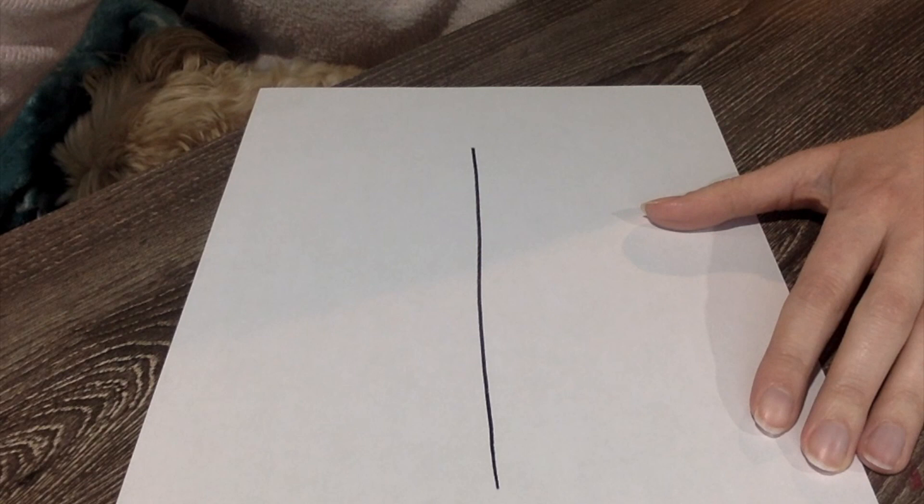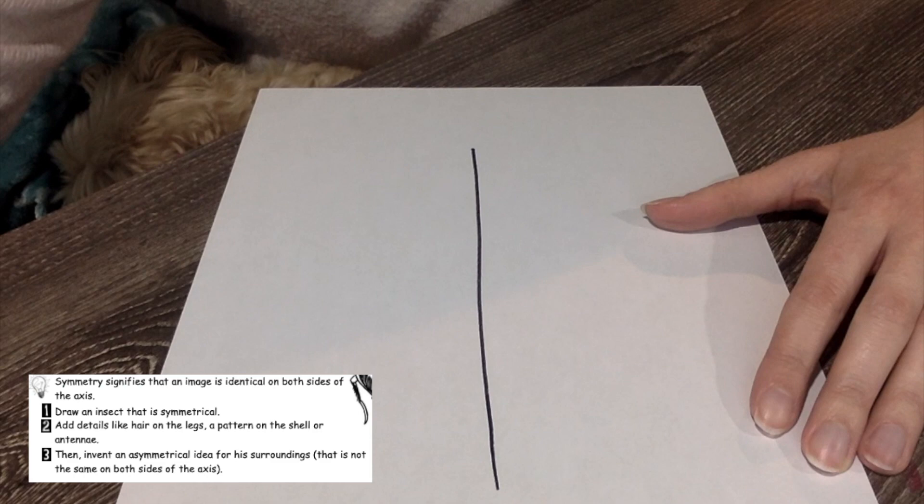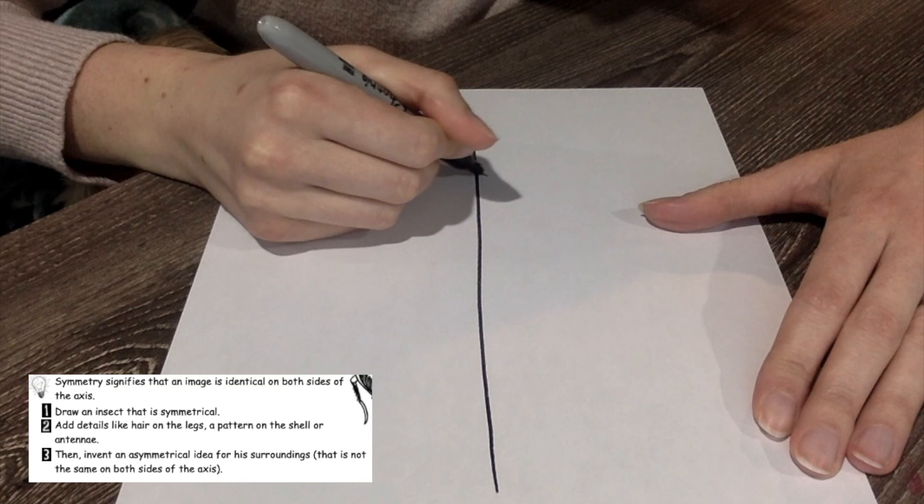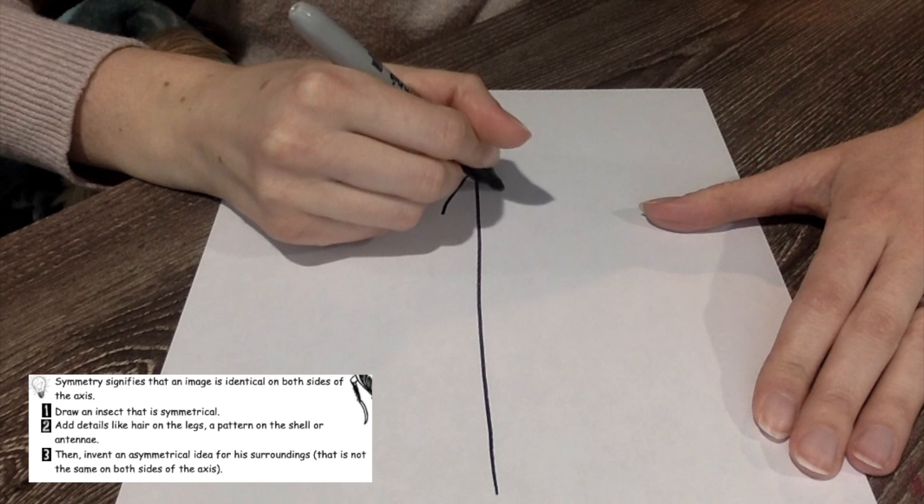Okay, so for our insect, you can follow along with this design or you can do your own. We're going to start off with the head at the top. So I'm going to try to make it along this line because it's easiest if you're able to see both sides of the line and be able to cut it in half like so.